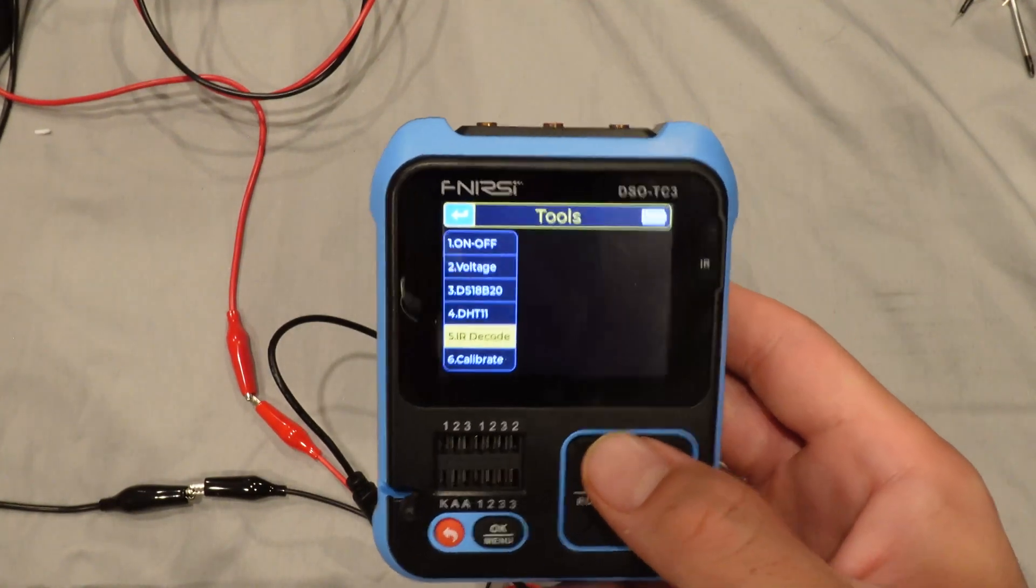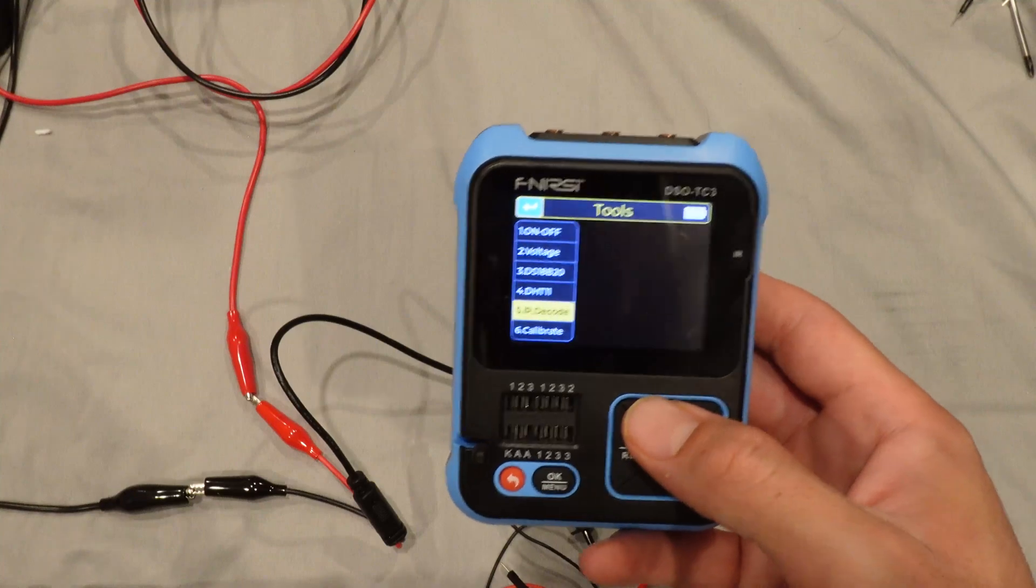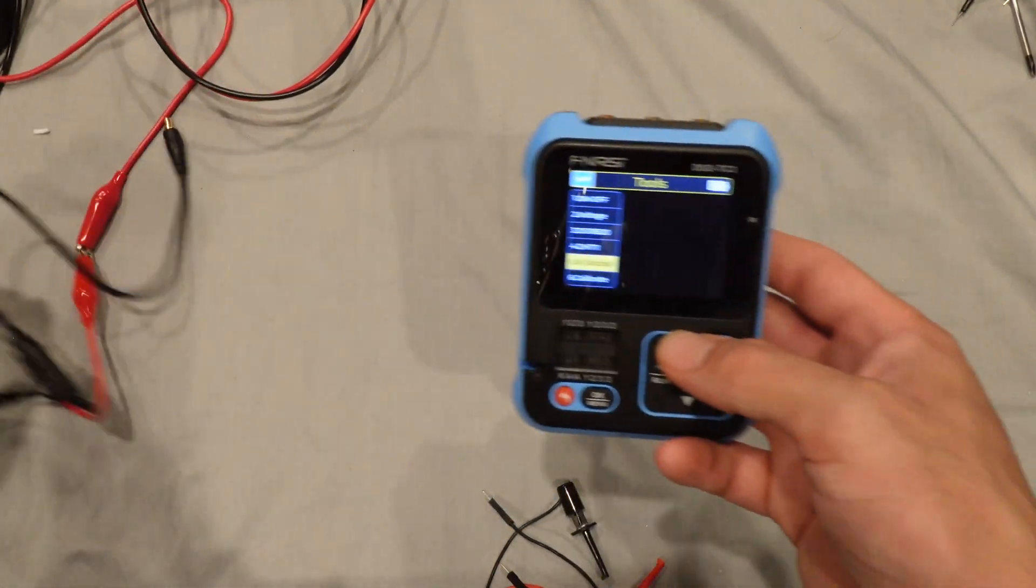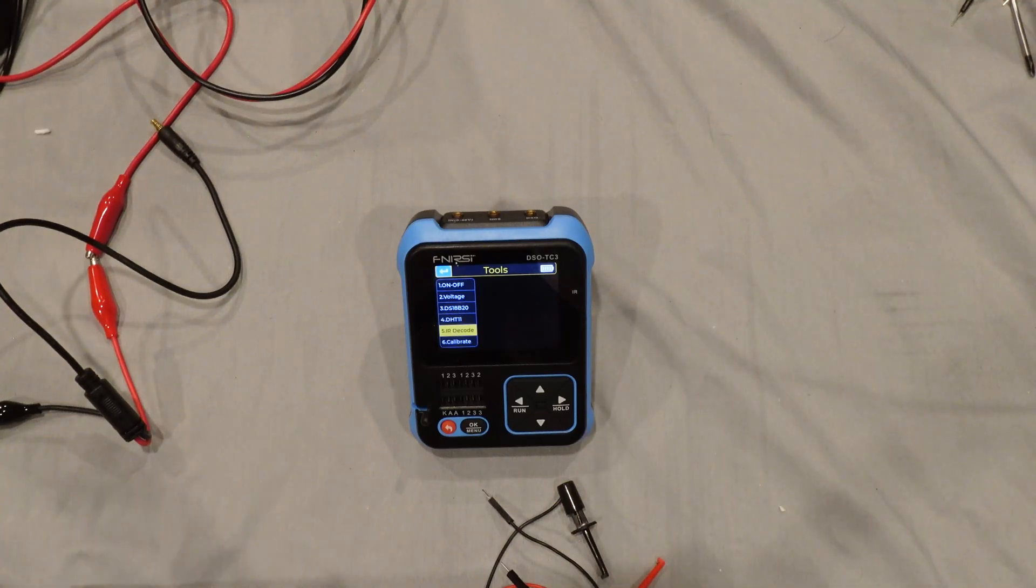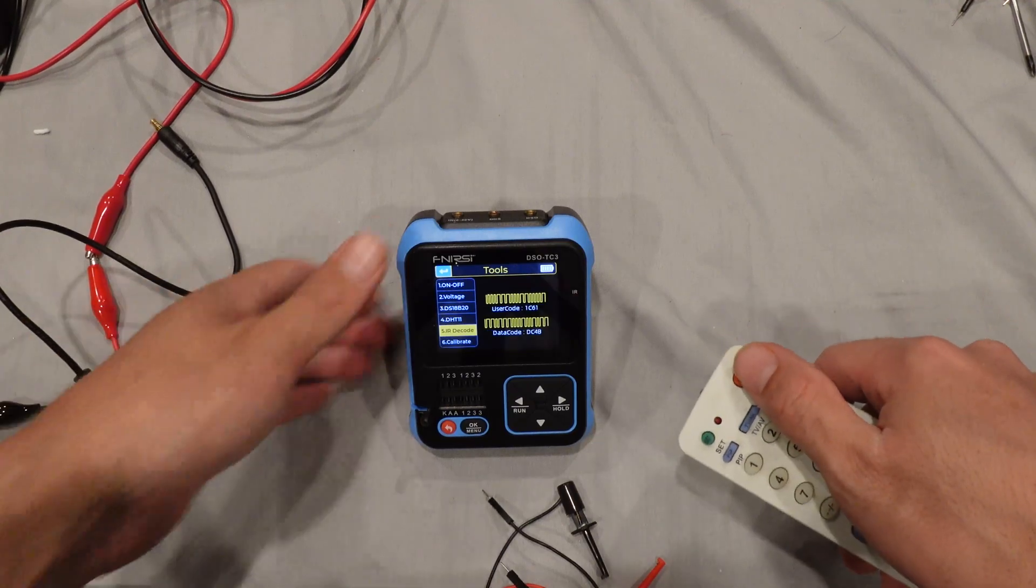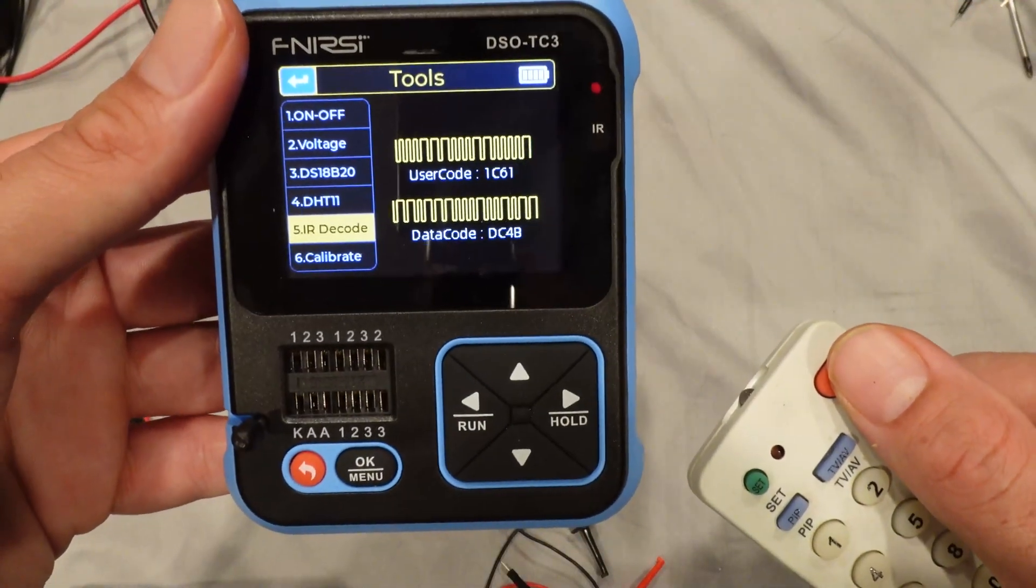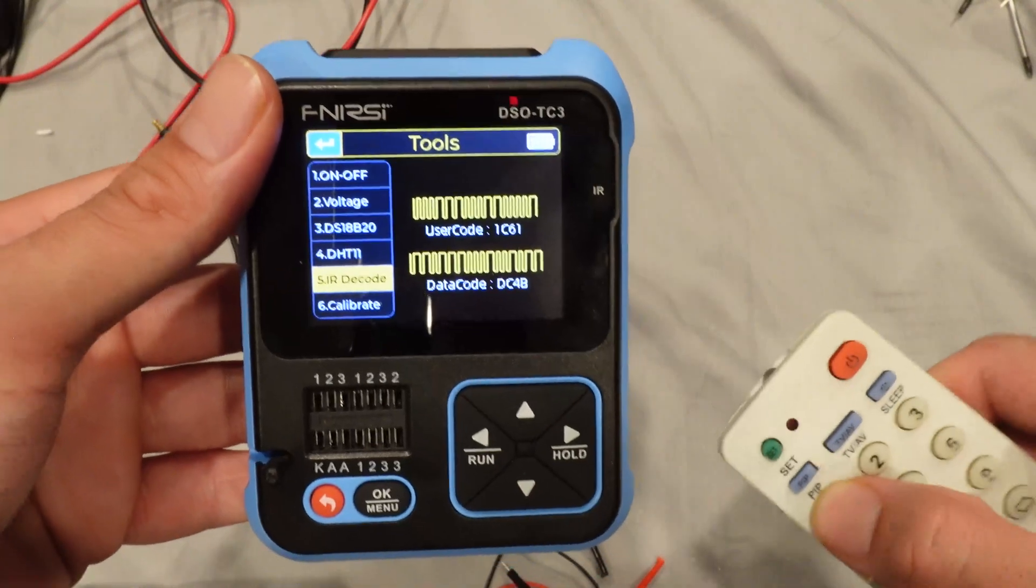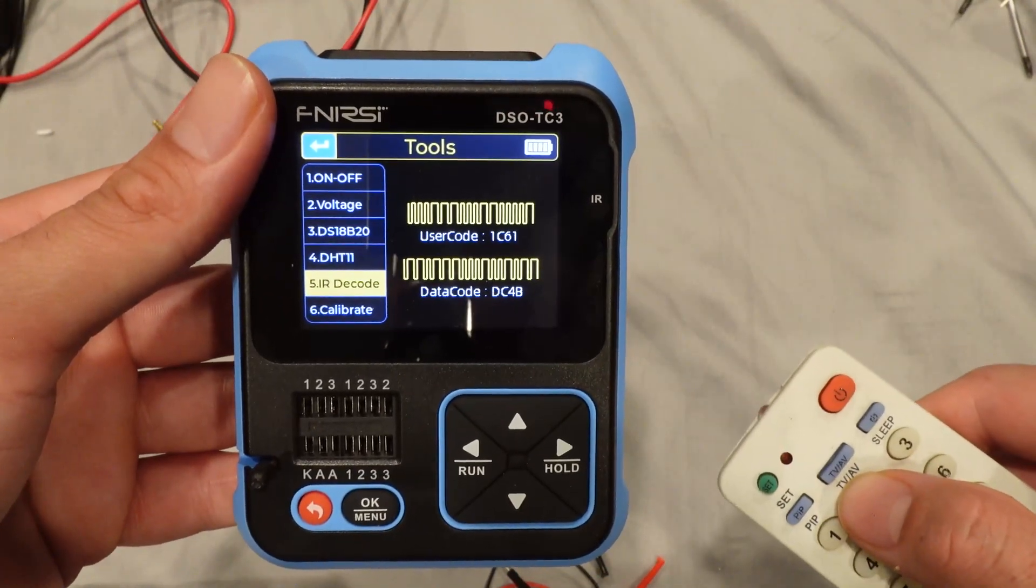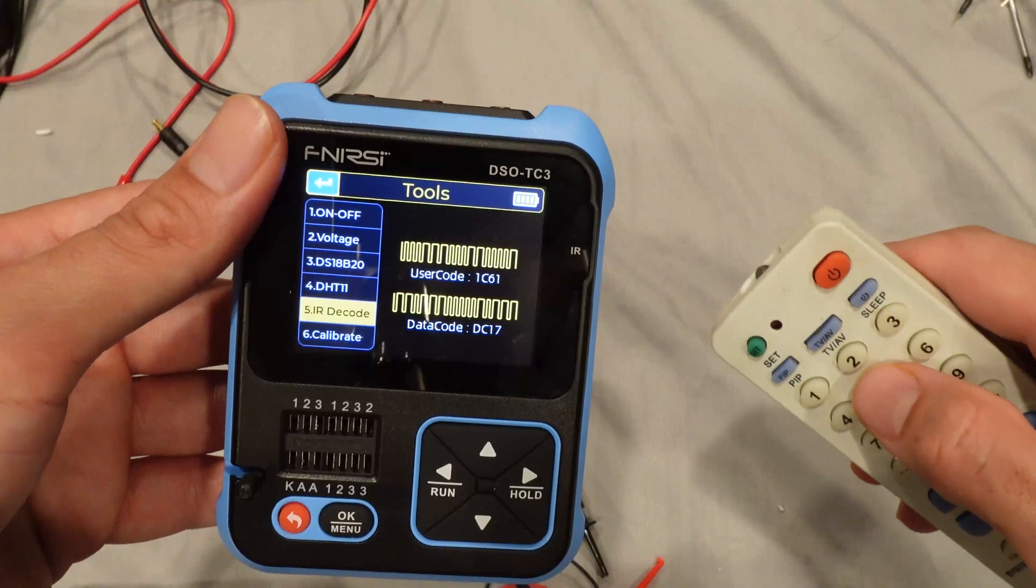Another thing that I like about this device is this IR decoder. So if you have a remote control, you can see the signal that you are sending by pressing the button. So I have this simple remote control. As you can see, by pushing the buttons, you can see the user code and the data code. Pretty cool.